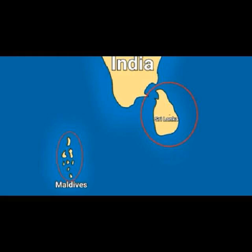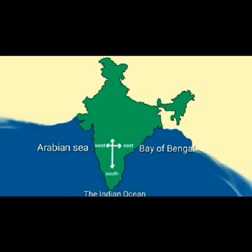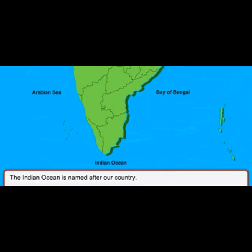Not only land boundaries, water boundaries also separate our country — like Sri Lanka and Maldives. These are island countries also. See here the 3 water bodies surrounding India. The Indian Peninsula has the Arabian Sea in the west, the Bay of Bengal in the east, and the Indian Ocean in the south. The Indian Ocean is named after our country — it is the only ocean that has a country's name.